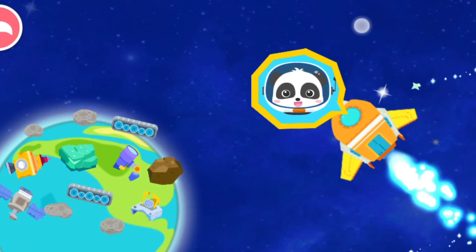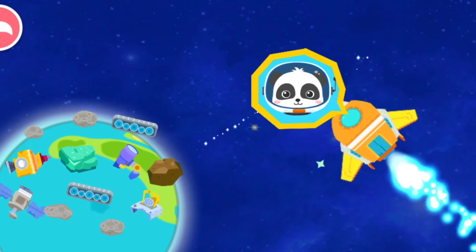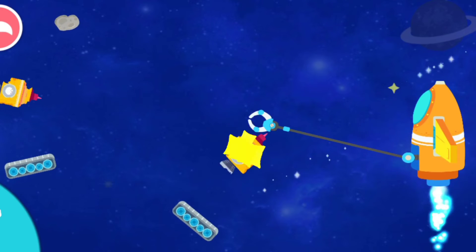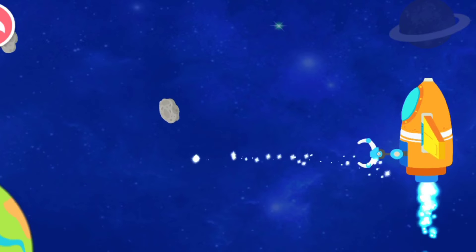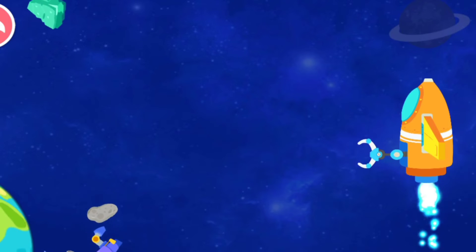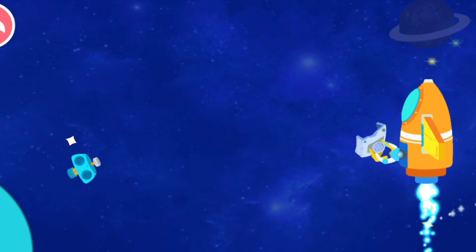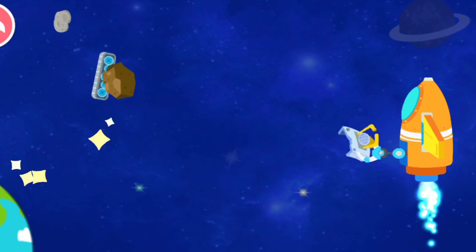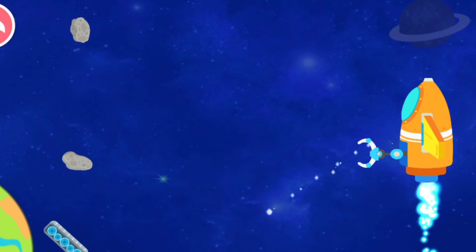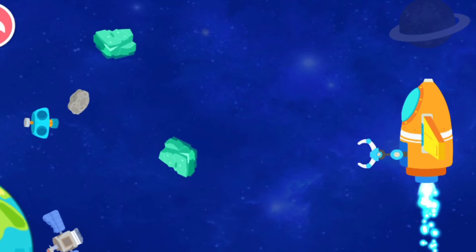Look! There is a lot of space junk floating above the Earth. Space junk is generated from the abandoned man-made satellites and spacecraft. Use the spacecraft's mechanical claws to collect the space junk. Great! We are halfway through the cleaning up.